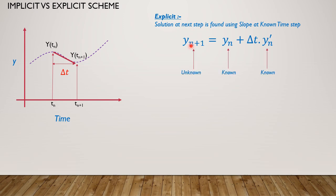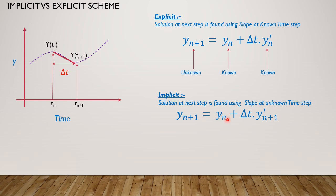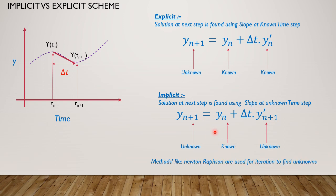For your implicit scheme, the solution at the next step is found using the slope at the unknown time step. The equation looks like: y at n+1 equals y at n plus delta_t times y-dot at n+1 — that is, the differentiation of the function is done at the unknown step. Since this is an unknown quantity, we cannot use analytical methods directly to solve it; we have to rely on methods like Newton-Raphson to iterate and find the value of the unknown. One thing to notice is that for your explicit scheme, the unknown and the known quantities lie explicitly on either side of the equation.